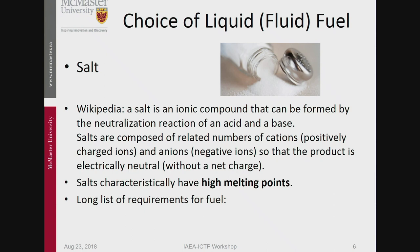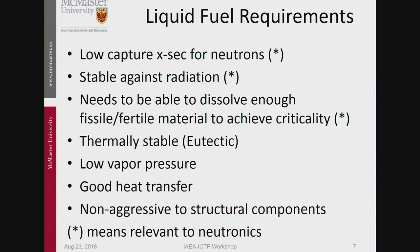Salts have characteristically very high melting points, and that's why they are good. There's a whole long list of requirements for these salts — the ones with an asterisk involve neutronics. You need a low capture cross-section for neutrons. But if your fuel is in the salt, you want a high capture cross-section because the fuel has to capture the neutrons. The salt has to be stable against radiation, and it needs to be able to dissolve enough fissile and fertile material to achieve criticality — that's a neutronics thing.